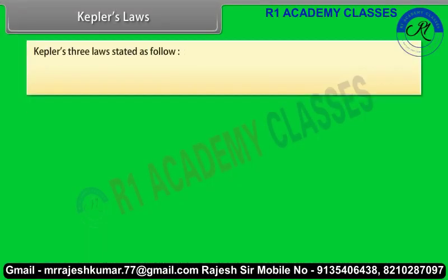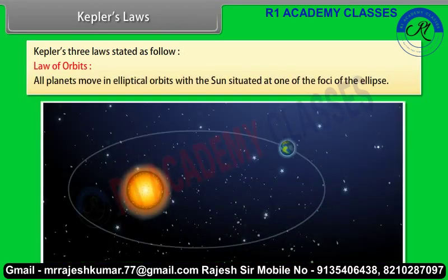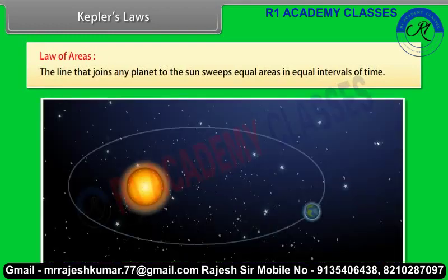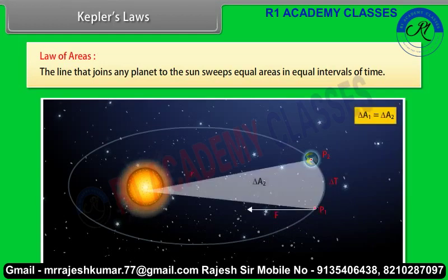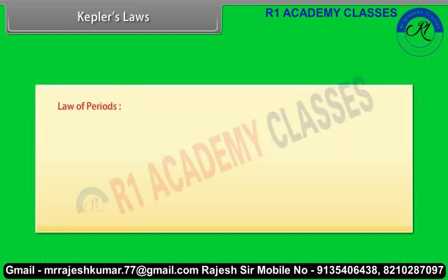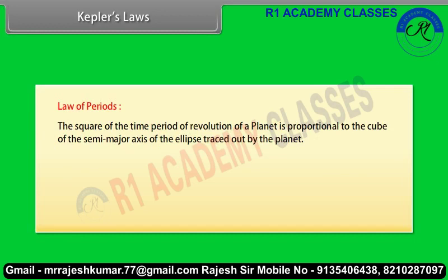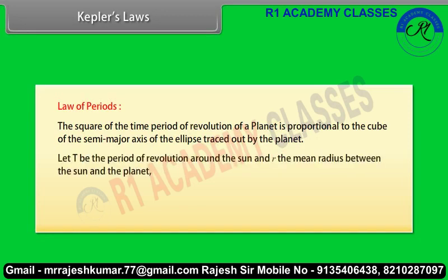Kepler's laws. Kepler gives three laws. Law of orbits: all planets move in elliptical orbits with the sun situated at one of the foci of the ellipse. Law of areas: the line that joins any planet to the sun sweeps equal areas in equal intervals of time. Planets appear to move slower when farther from the sun. Law of periods: the square of the time period of revolution of a planet is proportional to the cube of the semi-major axis of the ellipse. T² = kr³.